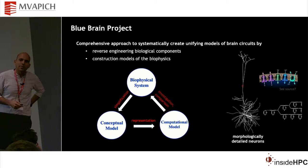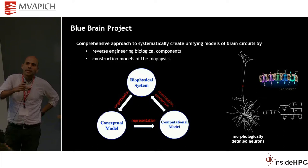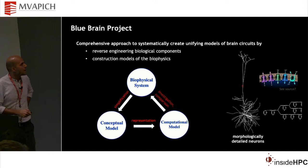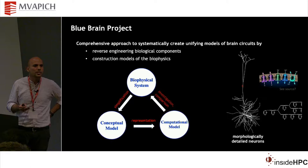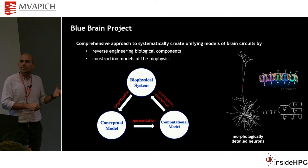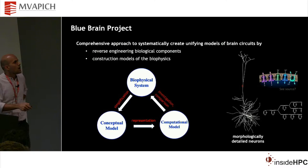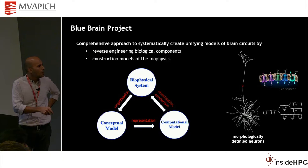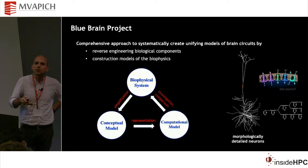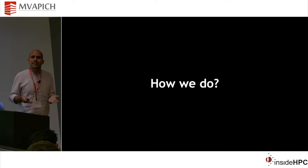At the BlueBrain project, we believe that having a comprehensive approach to navigate these different scales of brain simulation is important. The focus is on reverse engineering the fundamental components inside the brain cells, understanding the biophysical system, building conceptual models, and then simulating that on the computer. We focus primarily on morphological detail models, but we can zoom into internal details and do multi-scale simulations whenever necessary.